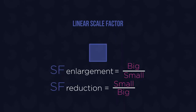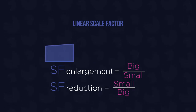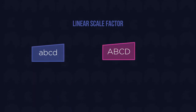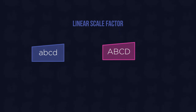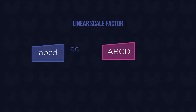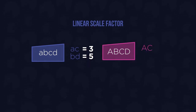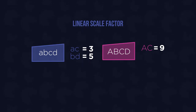Let's try an example of a linear scale factor. ABCD and A'B'C'D' are similar shapes, not drawn to scale. If AC equals 3, BD equals 5, and A'C' equals 9, what is B'D'?